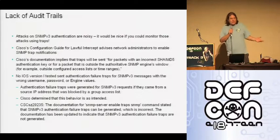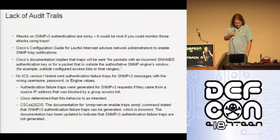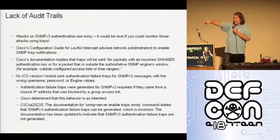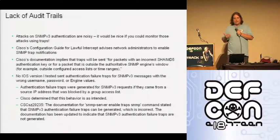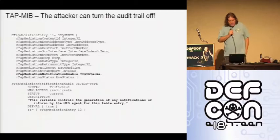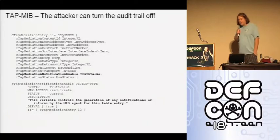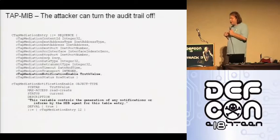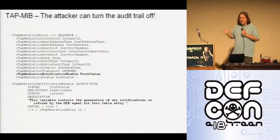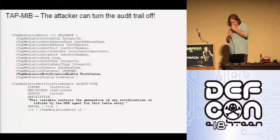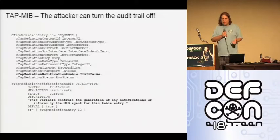You might think all that brute-forcing would be caught because it would generate logging information. But it turns out it doesn't do that either. The documentation implies that authentication failure traps would be generated — like in SNMPv2, where bad community strings triggered authentication failure traps. But in practice, I tried a bunch of different iOS versions and no traps or informs are generated when bad usernames and passwords are used. I told Cisco about it thinking it was an implementation bug, but they decided after deliberation that it was actually a problem with the documentation.